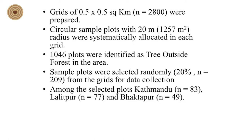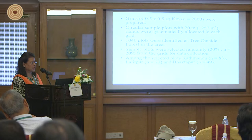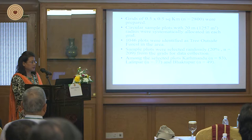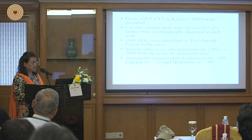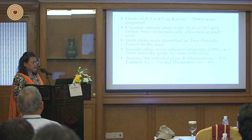Circular plots of 20-meter radius, measuring 1,257 square meters, were systematically allocated in each grid, resulting in 2,800 plots. Of these plots, only 1,046 were found to have trees outside forest. Only 20 percent — numbering 209 — were selected for data collection: 83 from Kathmandu district, 77 from Lalitpur district, and 49 from Bhaktapur district.